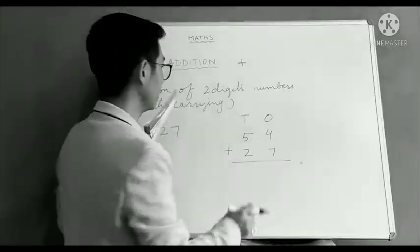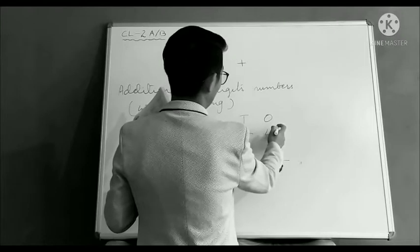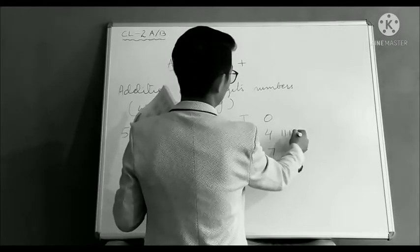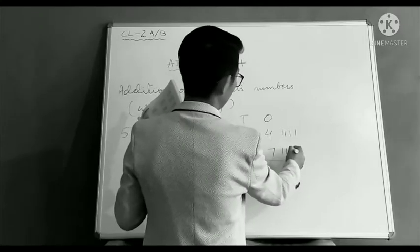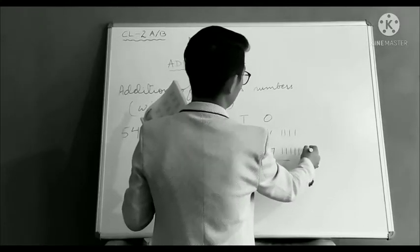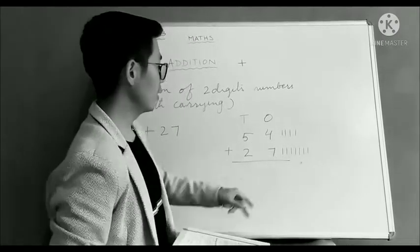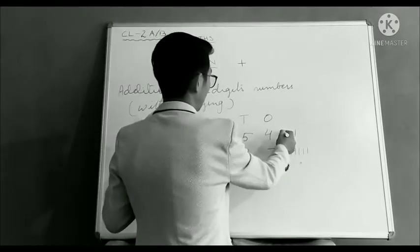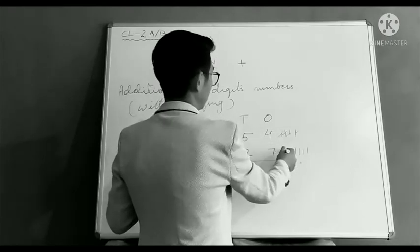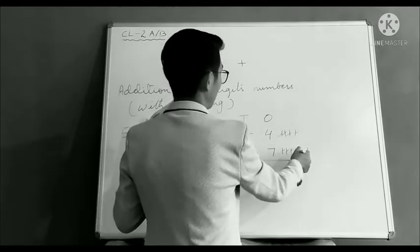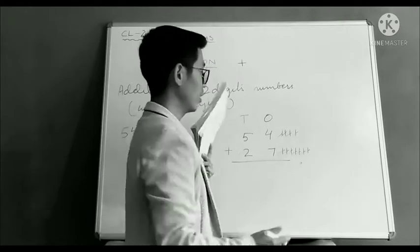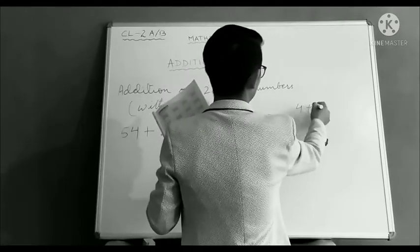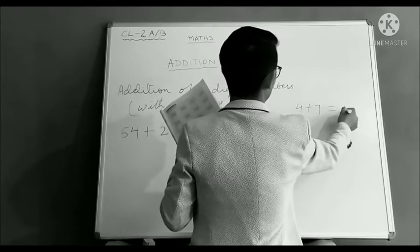Next thing is you need to add 4 plus 7. Counting: 1, 2, 3, 4, 5, 6, 7, 8, 9, 10, 11. So how much you got? 4 plus 7 equals to 11.